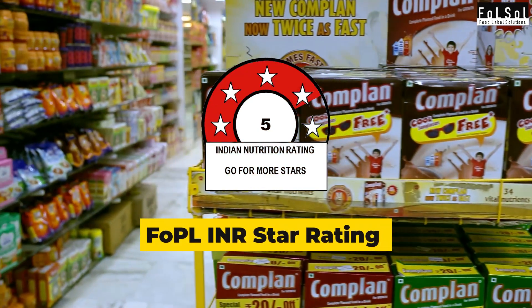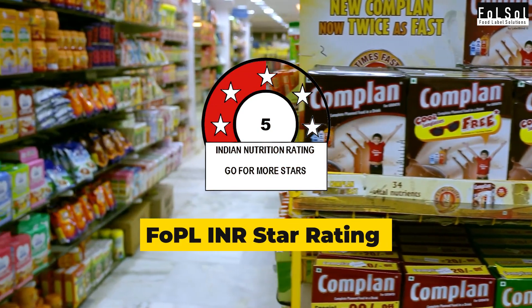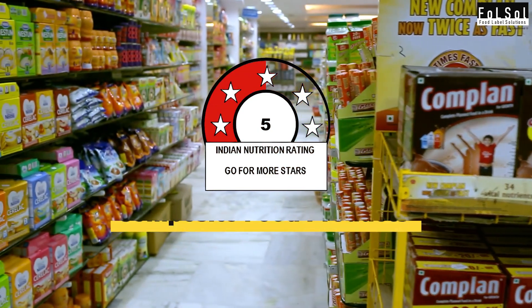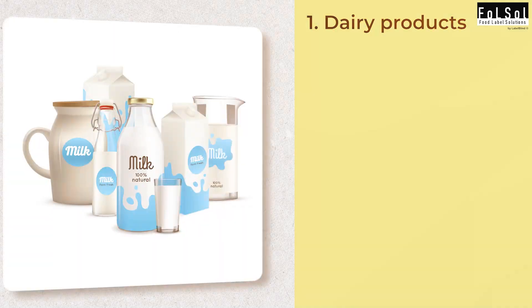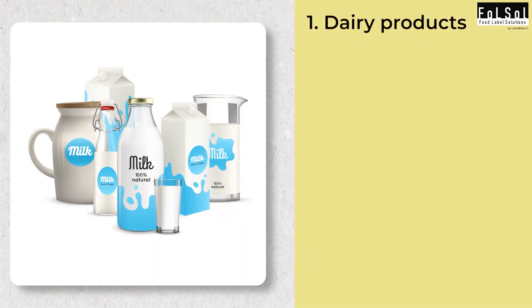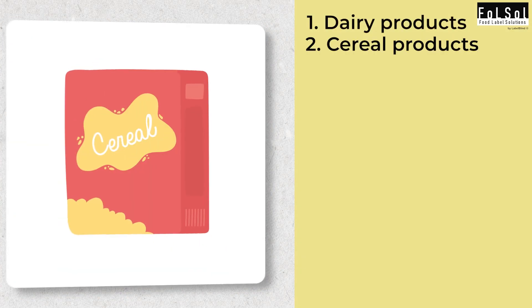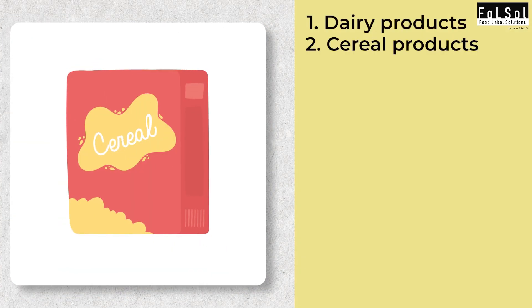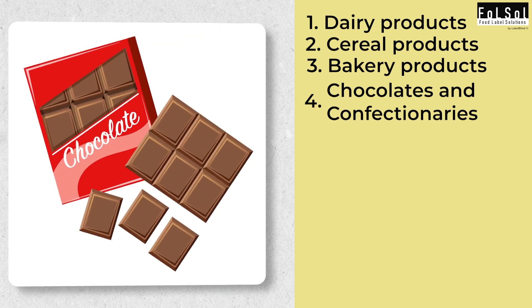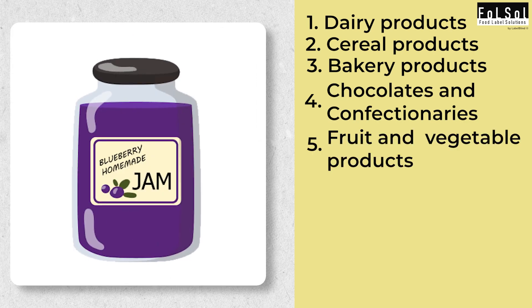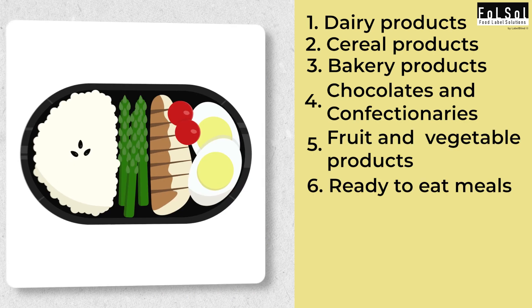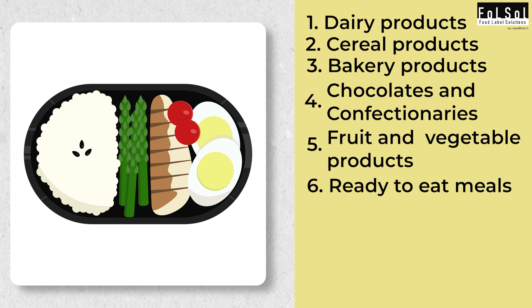FOPL INR star rating is suggested for composite food products such as dairy products, cereal products, bakery products, chocolates and confectionaries, fruit and vegetable products, and ready-to-eat meals.